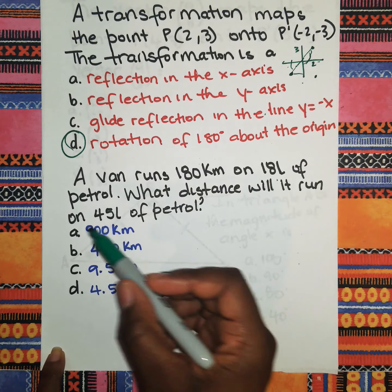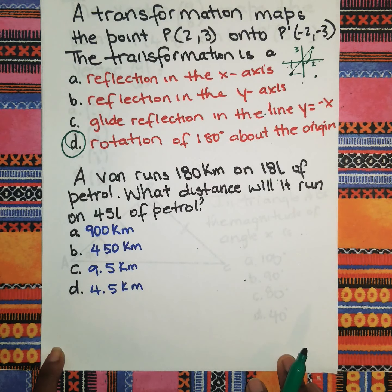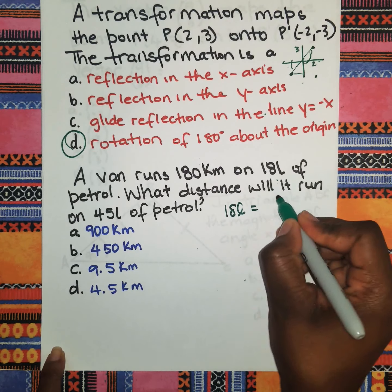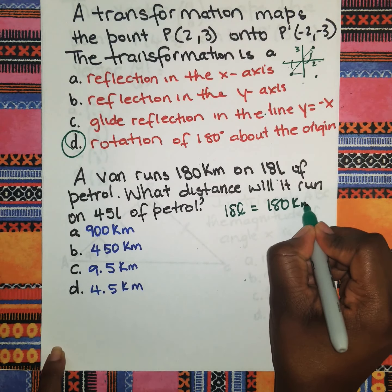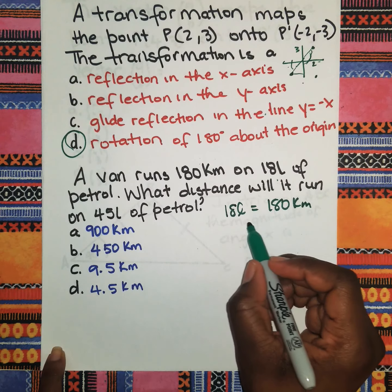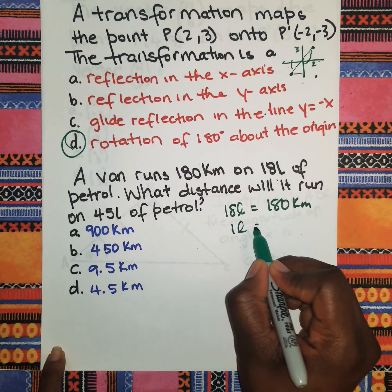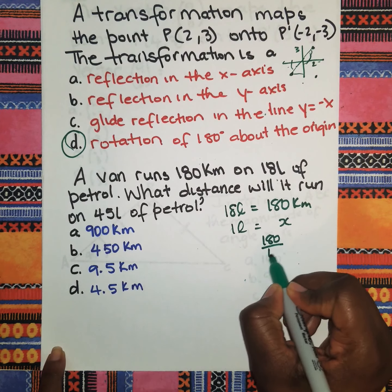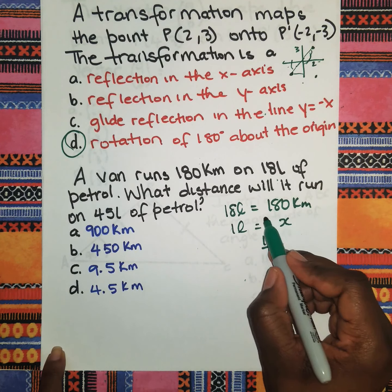The next question says a van runs 180 kilometers on 18 liters of petrol. What distance would it run on 45 liters of petrol? We know that on 18 liters of petrol you went 180 kilometers. If you want to know how much he runs on 1 liter of petrol, you can go ahead and find that by saying 180 divided by 18.